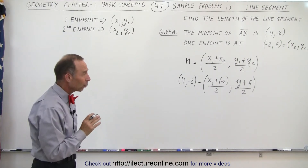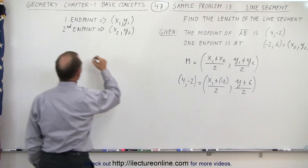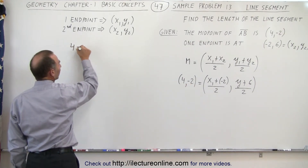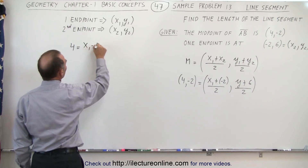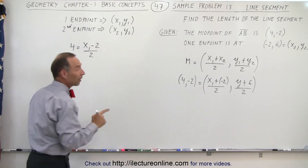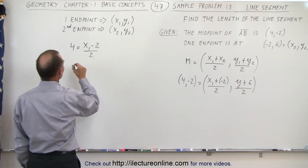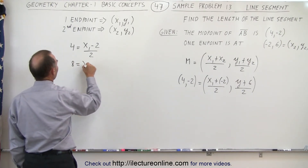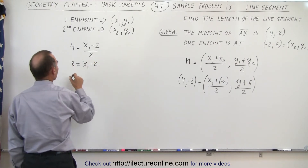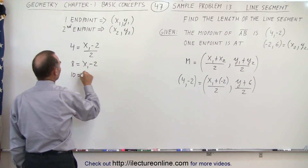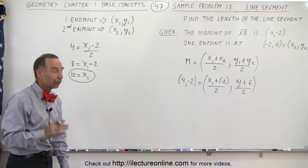Based upon that, starting with the x-component: 4 must equal (x1 - 2) divided by 2. That allows us to find x1. Multiplying both sides by 2, we get 8 equals x1 minus 2. Moving the minus 2 across, that becomes 10 equals x1. So we have the first coordinate of our first point.